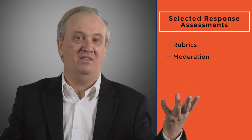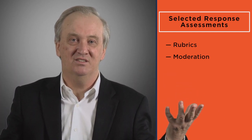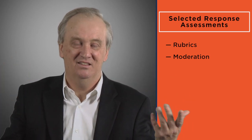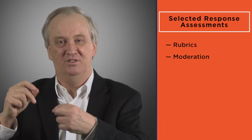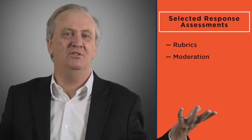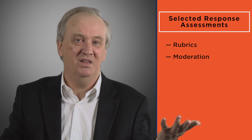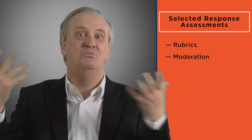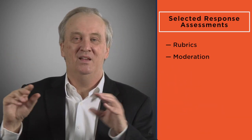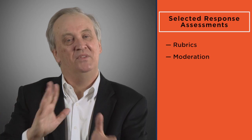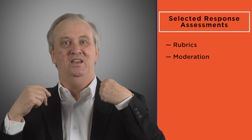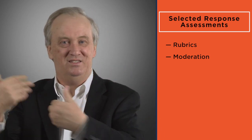A funny thing to look at in terms of rubrics is the gymnastics at the Olympics, where everyone gets 9.987 or something, and you wonder how on earth do they do that. Well, there's a rubric which measures what a good gymnastics performance might be, or a good diving performance — that's even more obscure in some ways. So in other words, it's not a matter of just simply making a judgement about a piece of text or a performance in the case of gymnastics or diving.